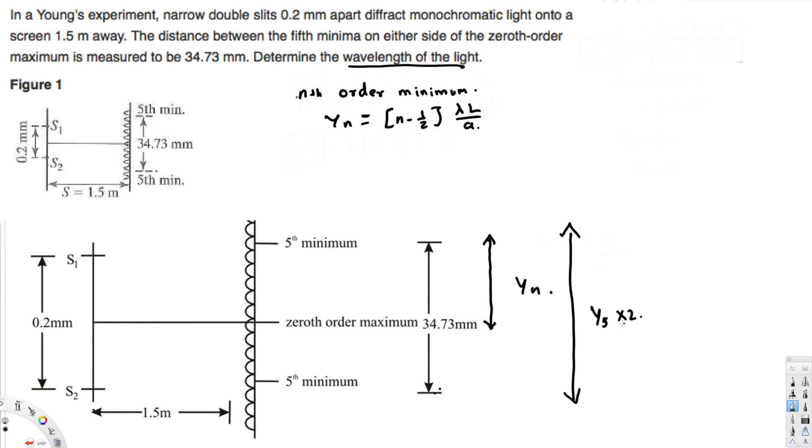But since we have from here to here, this is two times y5. Okay, this is the one provided, that's equal to 34.73 millimeters. Now we are interested in finding lambda, the lambda is the question.